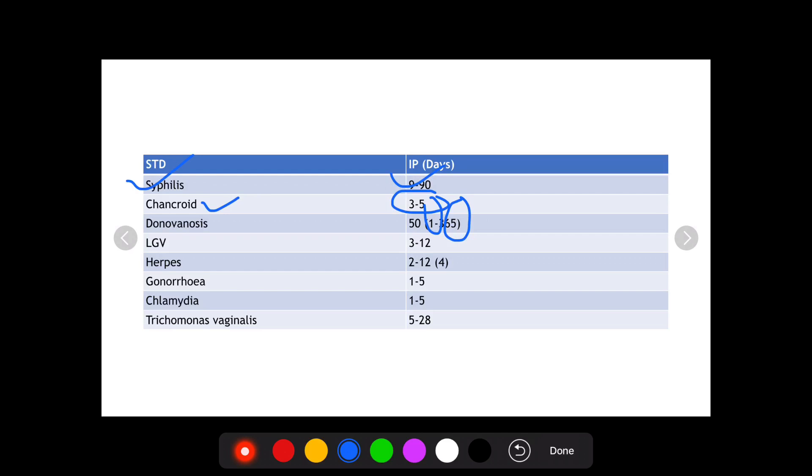For herpes, the average incubation period is 4 days, while the range being from 2 to 12 days. For gonorrhea and chlamydia, both organisms which cause urethritis, the incubation period is similar of 1 to 5 days, while for Trichomonas vaginalis, it's a protozoan which causes STDs and characteristically affects females only and causes something known as a strawberry vagina. The incubation period for Trichomonas vaginalis is 5 to 28 days.